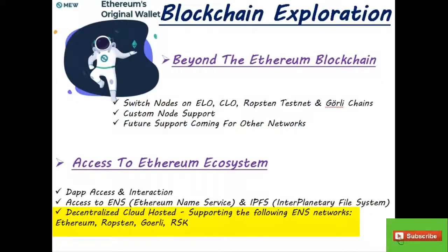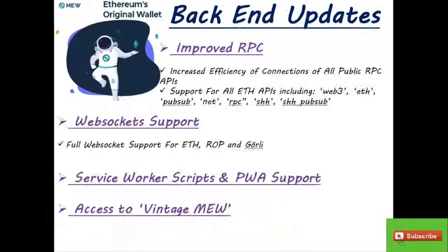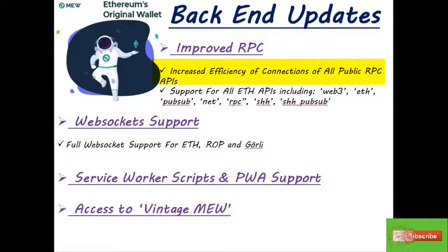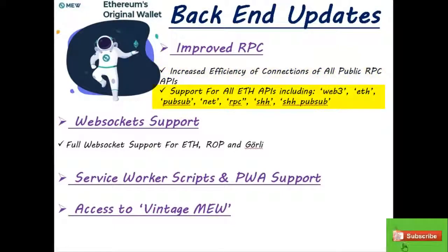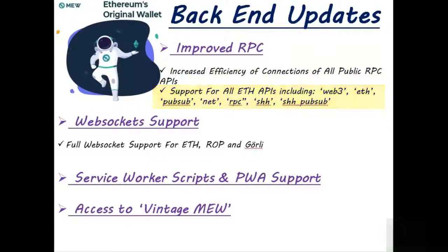ENS domains are built on smart contracts, so they are not vulnerable like the DNS system. In the background, they have improved RPC — an overall of the API backend that increases the efficiency of connections. Mew 5 now supports a number of ETH APIs.